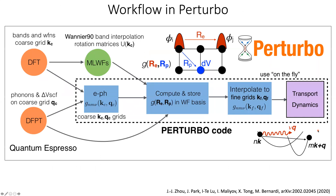This is the workflow of Perturbo. We start from DFT and compute the band structure and wave functions on a coarse grid Kc. Then we use density functional perturbation theory (DFPT) to compute the phonons and DVSCF — the phonon perturbation potentials — on a coarse grid Qc. These two steps are done using Quantum ESPRESSO.